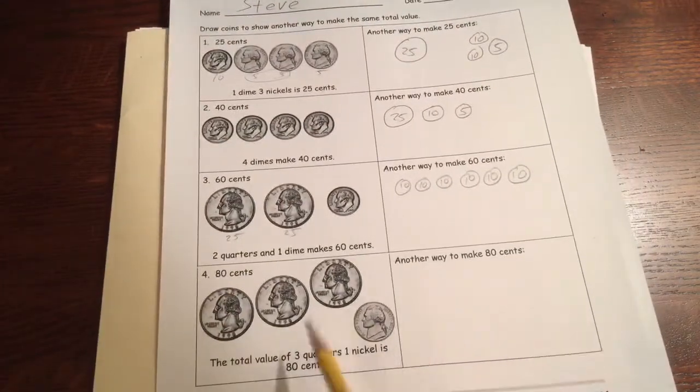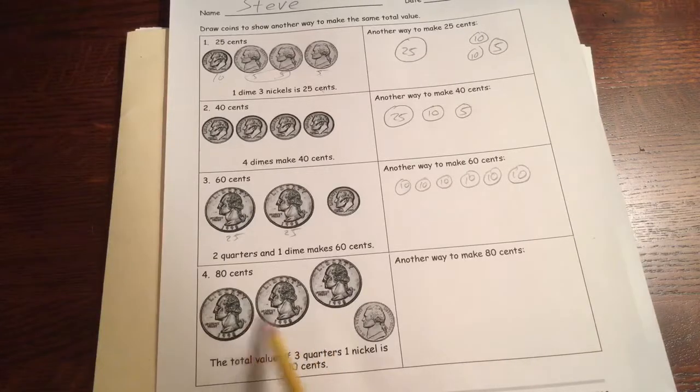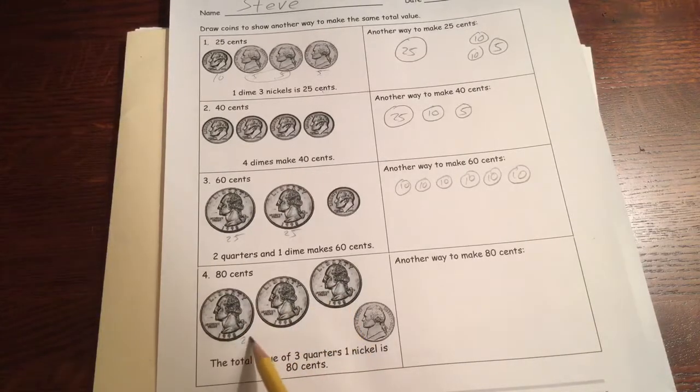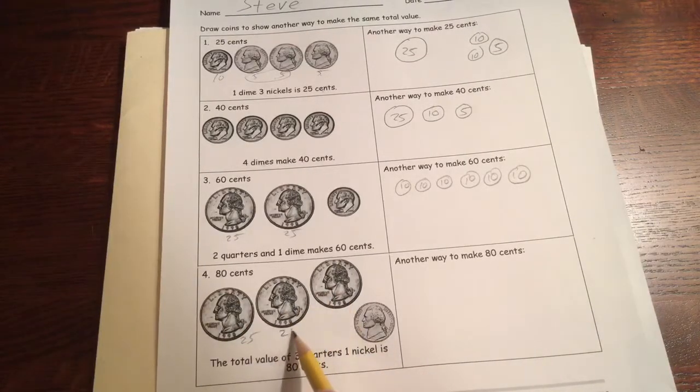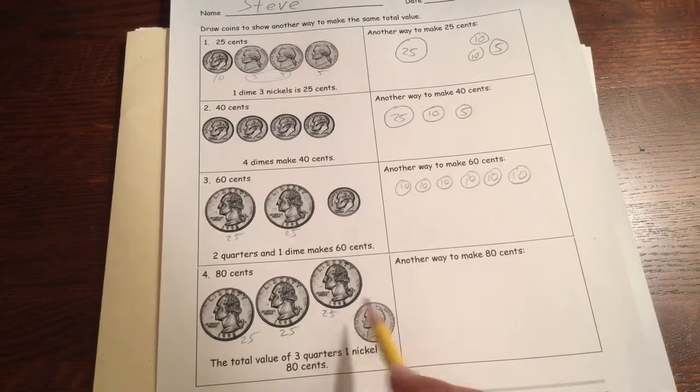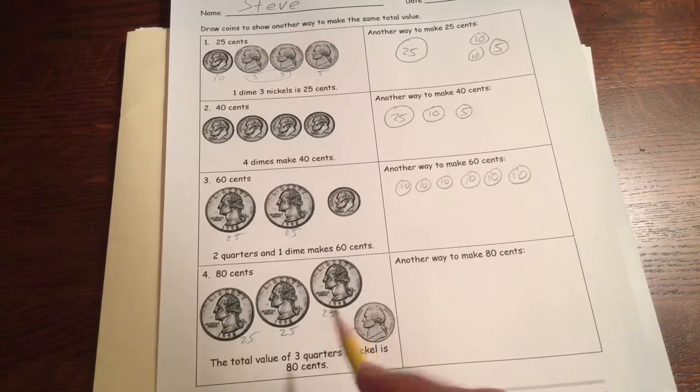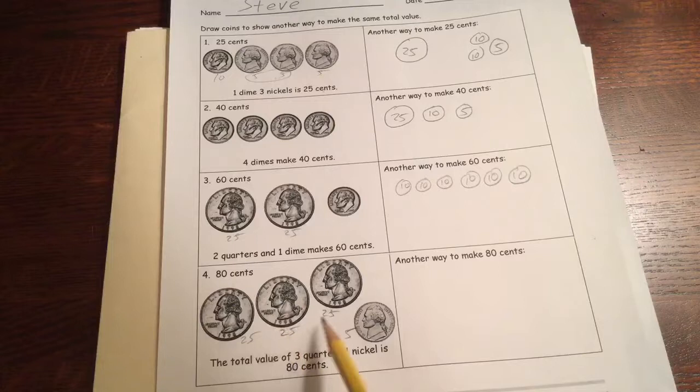And here we have 80 cents. The total value of three quarters. That's three 25's. And a nickel is five more. So if you know your 25's, it's useful to know them.